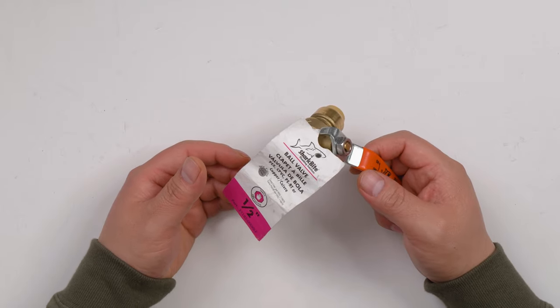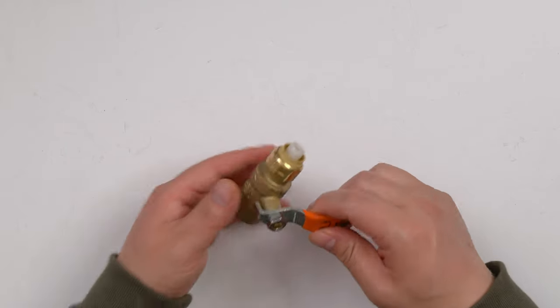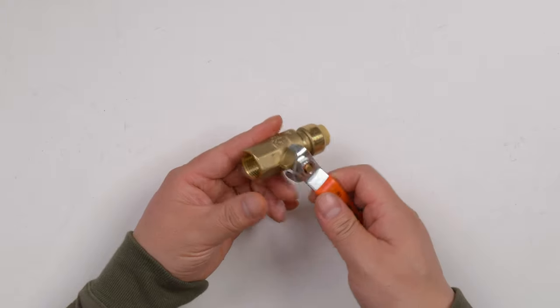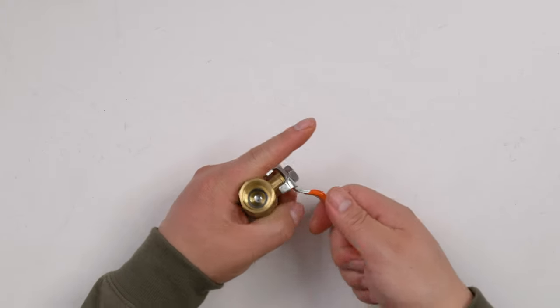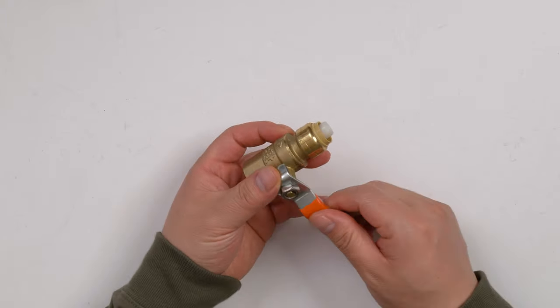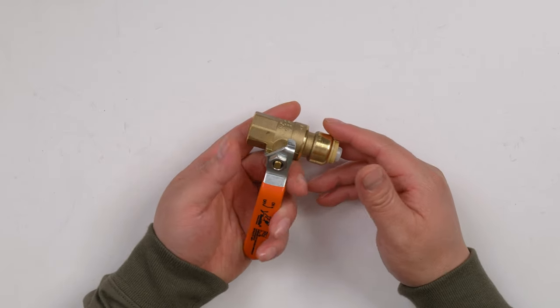This is a SharkBite ball valve with FNPT. One side is push connect, the other side is a female connector. In this video I'm going to show you how to connect it and how to remove it. Let's get started.